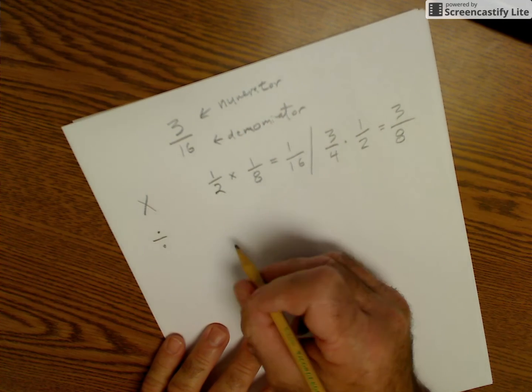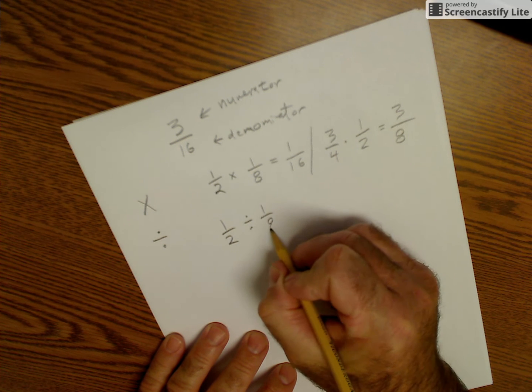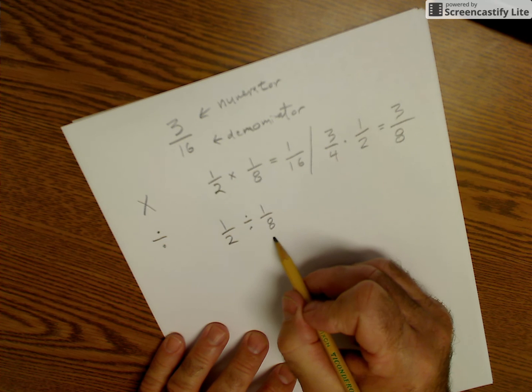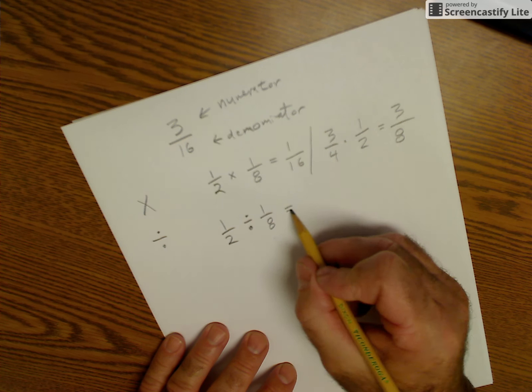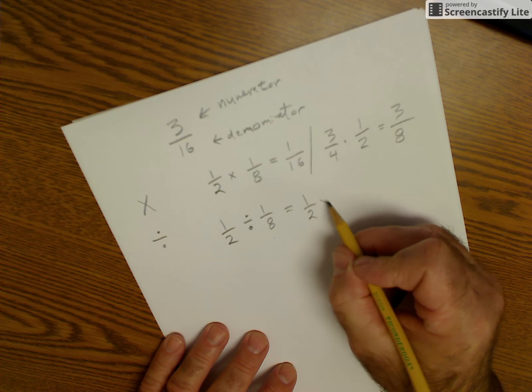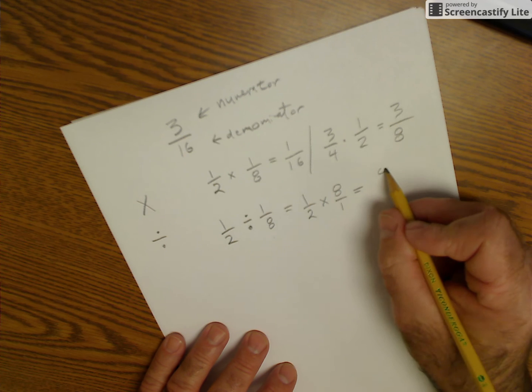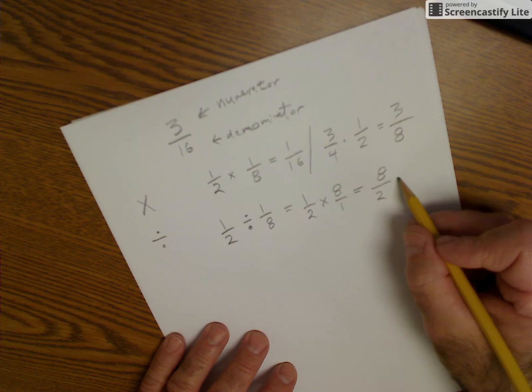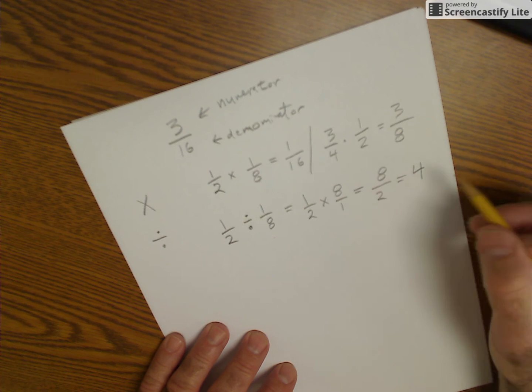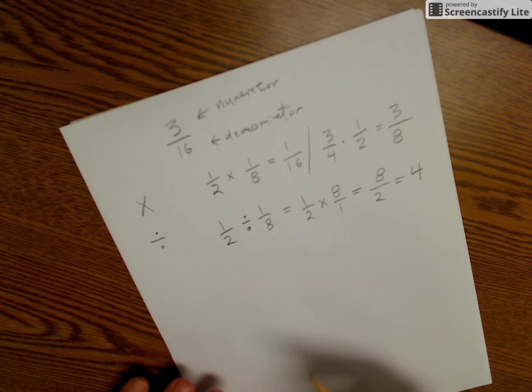Division is similar. If I have 1/2 divided by 1/8, what I do is I flip the second term over. So 1/2 divided by 1/8 is the same as 1/2 times 8/1. Then I just multiply across the top to get 8, multiply across the bottom to get 2. 2 goes into 8, 4 times.